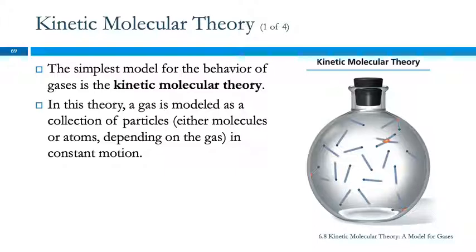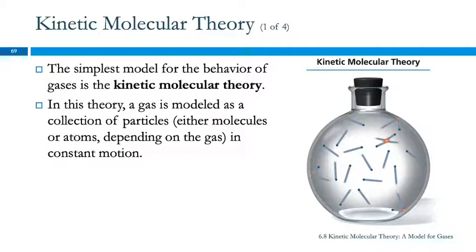Here we have an illustration of a flask containing a gas, and the vapor trails show that these particles are moving. They're moving in a straight line until they run into something. They're not going through air because they are the air — they are traveling through nothing. They can collide with each other or with the walls of the flask.